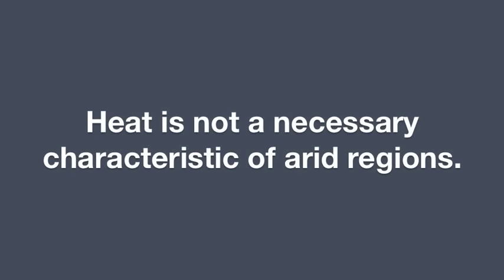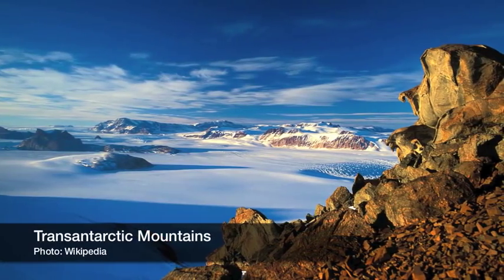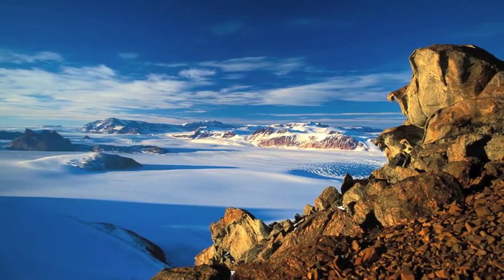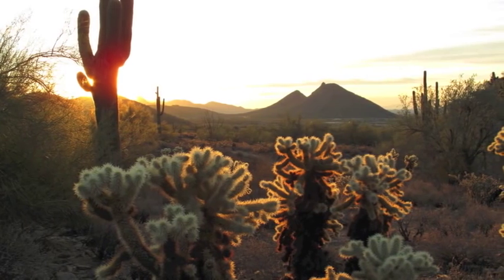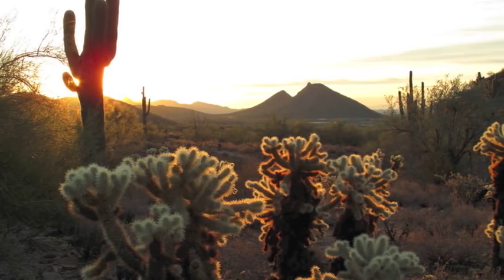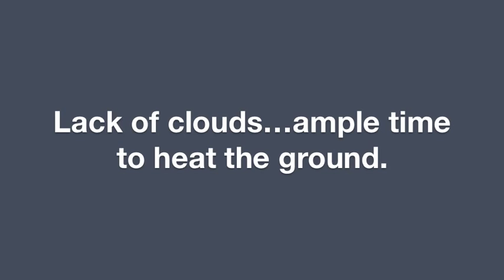Heat is not a necessary characteristic of arid regions. For example, both the polar regions are arid. It's hot here for a variety of reasons. We're located fairly far south, so the sun gets high overhead during the summer. The lack of clouds means that the sun has ample time to heat up the ground, which then heats up everything else.